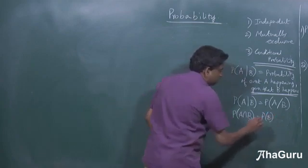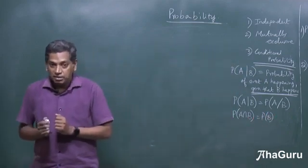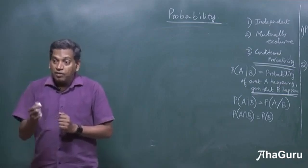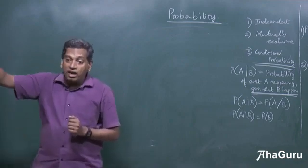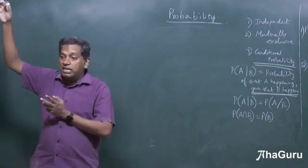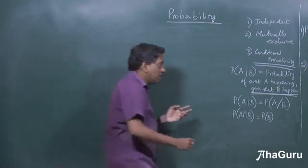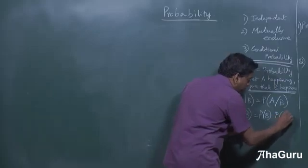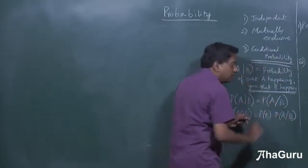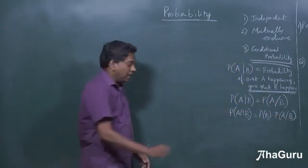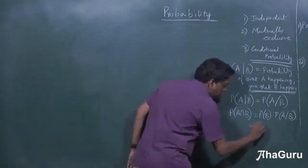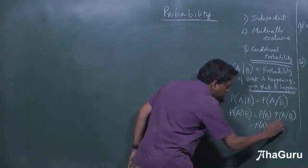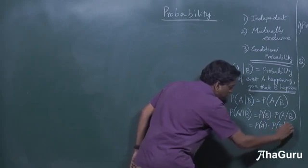You will say, first, let's assume B happens. So, probability of that is P of B. Then, for A, you shouldn't write P of A because that's when if A and B are independent. You should say, now that B has happened, what is the probability of A given B? Or, another way of writing is P of A into P of B given A.